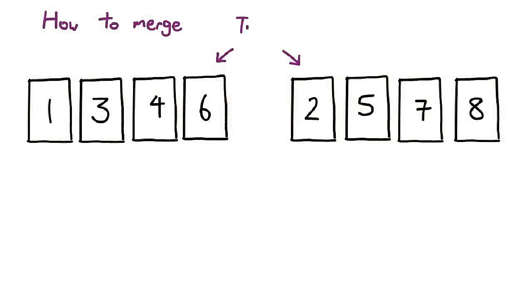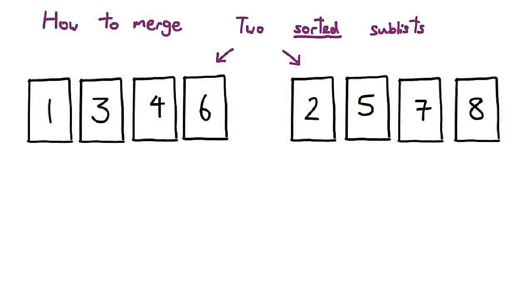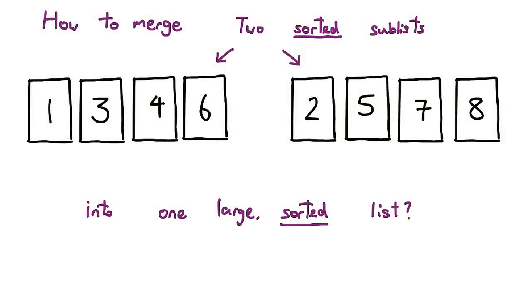If I have two sorted lists — emphasis on the sorted, because this will not work if these sublists are not sorted — how can I put them together in a way that keeps the fact that they are sorted?